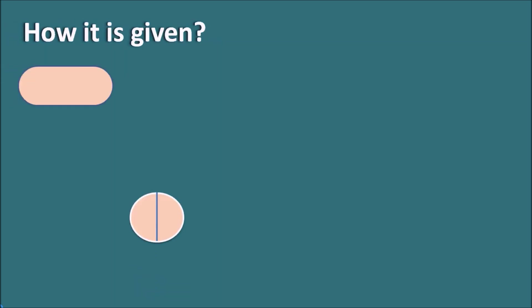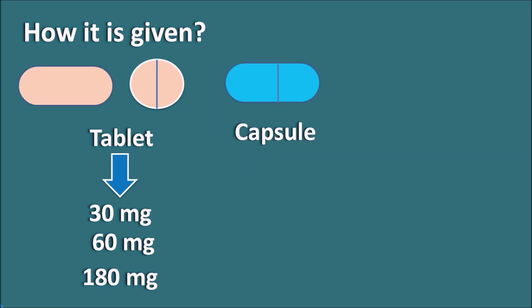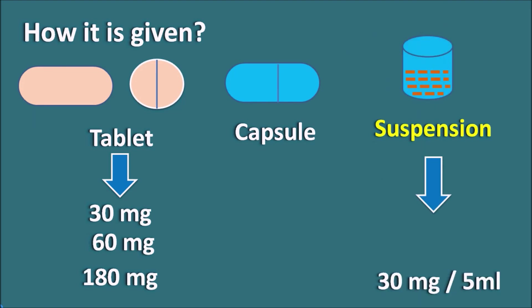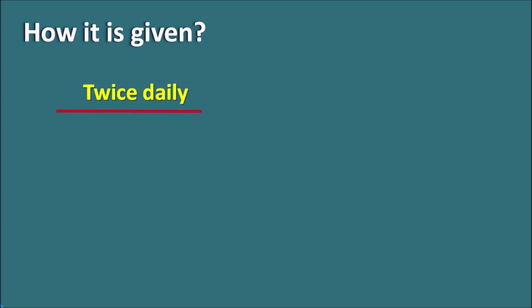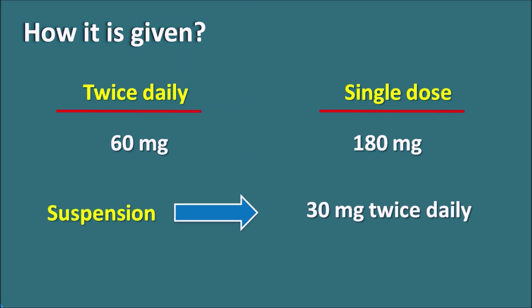Fexofenadine is given as a tablet at doses of 30 mg, 60 mg, and 180 mg. It is also available as a capsule at 60 mg, and as an oral suspension at 30 mg per 5 ml. The dose depends on the allergic condition and the age of the patient. It can be given twice daily at 60 mg, for a maximum dose of 120 mg, or as a single 180 mg dose. The suspension can be given at 30 mg twice daily, for a maximum of 60 mg. Fexofenadine, well known as Allegra, is a selective H1 antagonist with less sedation and drowsiness compared with first generation antihistamines.